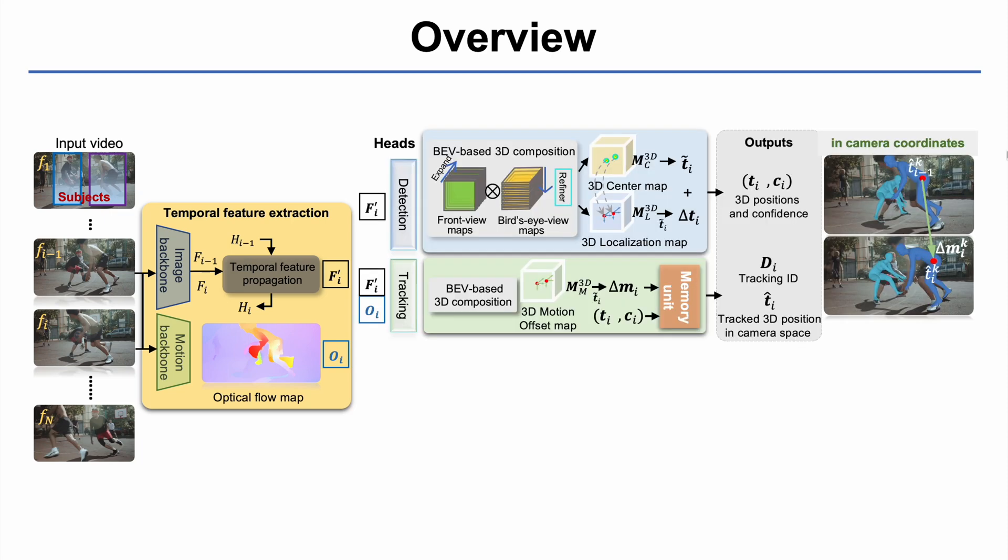The detection and tracking branches take these features and perform multi-subject tracking to recover the 3D human trajectory in camera coordinates. Specifically, the detection head estimates the 3D positions and confidence of all people in each frame.